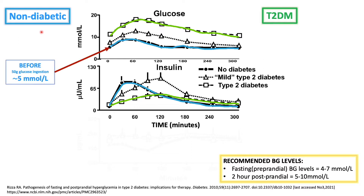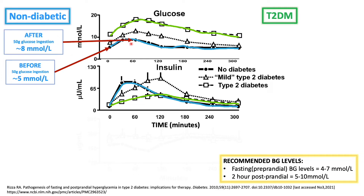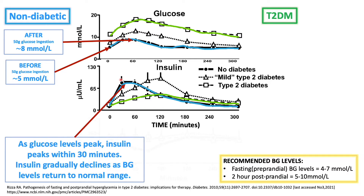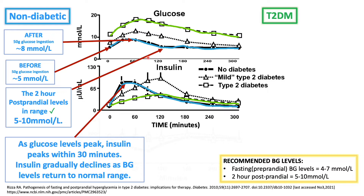Let's start with the person with no diabetes. Before ingestion of 50 grams of glucose, preprandial glucose levels are 5 mmol/L. Preprandial glucose levels should be between 4 and 7 mmol/L, and 2-hour postprandial should be between 5 and 10 mmol/L. After ingestion of 50 grams of glucose, levels rise to 8 mmol/L. As glucose levels peak, so do insulin levels, with insulin peaking at approximately 30 minutes — this is your phase 1. As glucose levels decline, insulin levels also decline and eventually phase 2 takes over. At the 2-hour mark, postprandial levels are approximately between 5 and 10 mmol/L, so levels are in check.